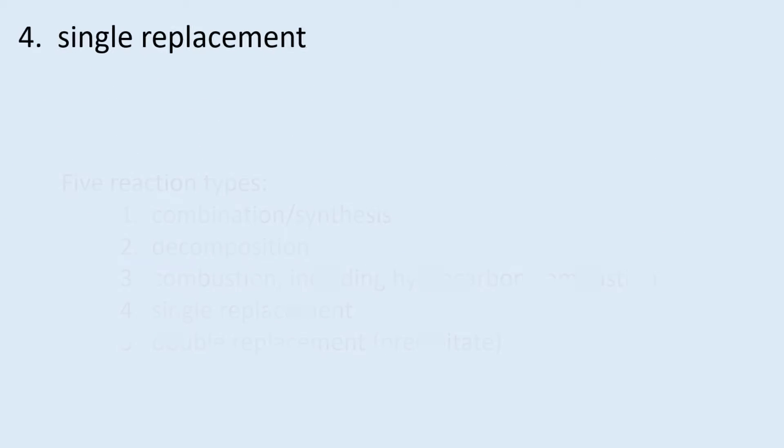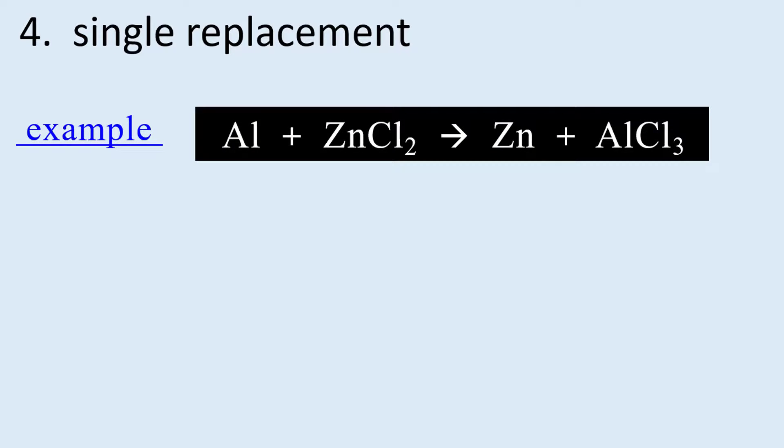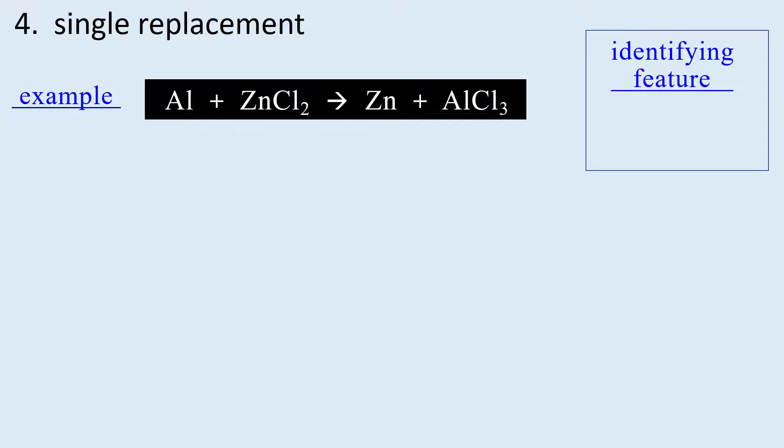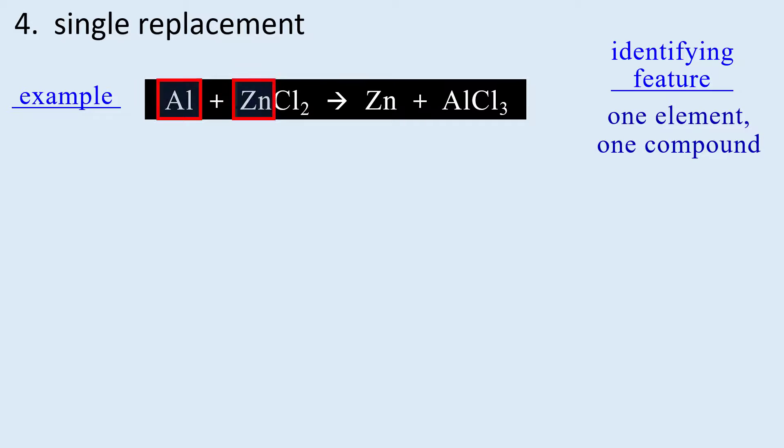Reaction 4 is single replacement and some textbooks call it single displacement but it's the same thing. Our example is aluminum reacting with zinc chloride. The identifying feature is an element, usually a metal, reacting with an ionic compound. You may notice from the products that the two metals switch places.